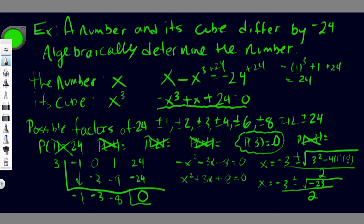Let's verify: 3 minus 3 cubed equals 3 minus 27 equals negative 24. That checks out. Since the quadratic formula gives a negative discriminant, there are no other real solutions. Therefore, the only solution is x equals 3.